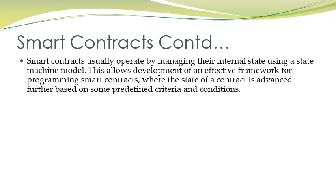Smart contracts usually operate by managing their internal state using a state machine model. Every blockchain has a state, and when a transaction is added to the blockchain the state of the system gets modified — it transforms from one state to another. When the smart contract verifies the conditions and the transaction is finalized, the system converts from the previous state to the next state. This allows development of an effective framework where the contract's state advances based on predefined criteria and conditions.